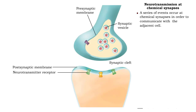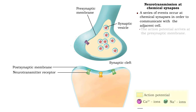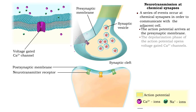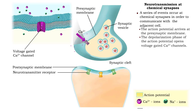A series of events occur at chemical synapses in order to communicate with the adjacent cell. When the action potential arrives at the presynaptic membrane, its depolarization phase opens voltage-gated calcium channels, allowing the inflow of calcium ions from the extracellular fluid.